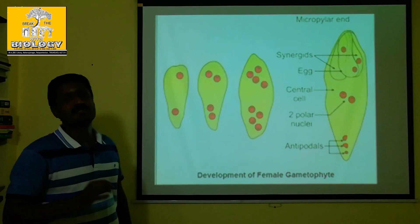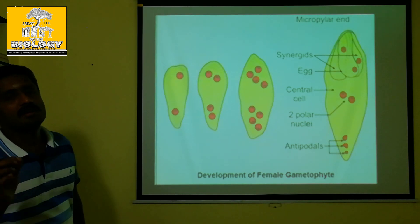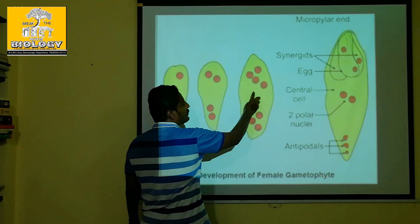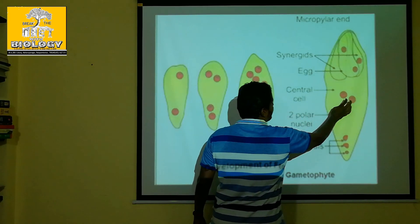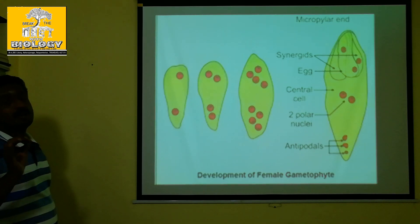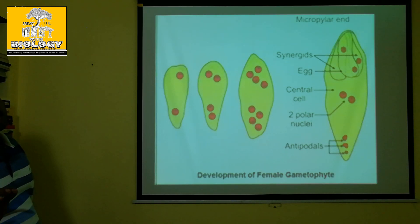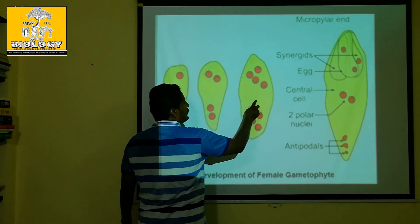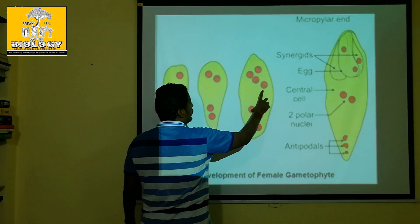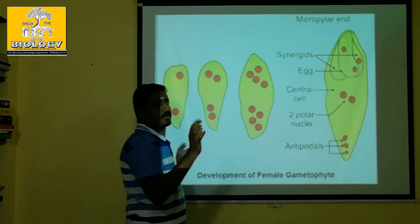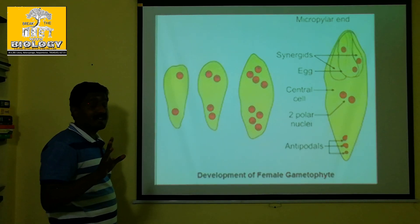The first cell type is the Polar Nucleus. This polar nucleus is haploid. Here is a haploid. Some of these do not fall.